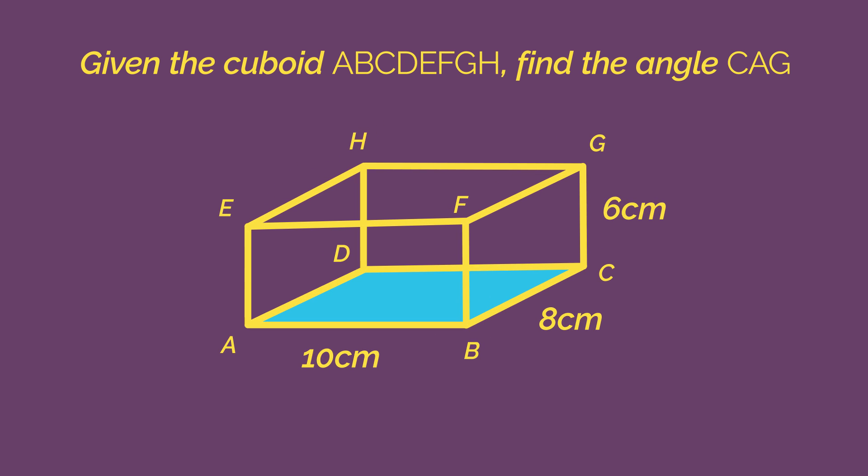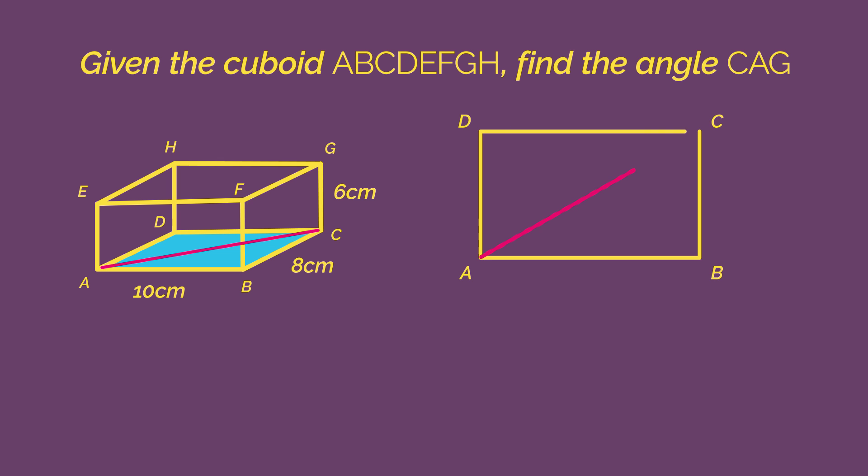To find the length of AC, we need to go back to our first diagram and draw on the line AC. We can easily find the length of AC using Pythagoras on this triangle. It's better to keep it as √164 because this is the most accurate answer. You need to be careful not to round any values too early on in these questions.